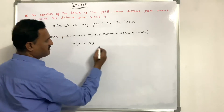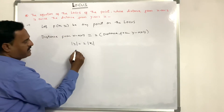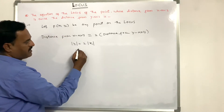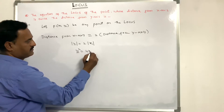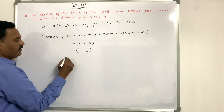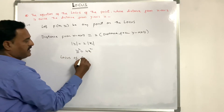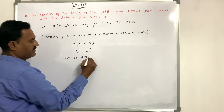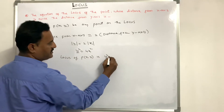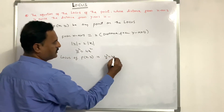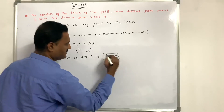Distance from y-axis is x1. Squaring on both sides, y1 squared is equal to 4x1 squared. Therefore, the locus of P(x1, y1) is y squared is equal to 4x squared. This is the answer.